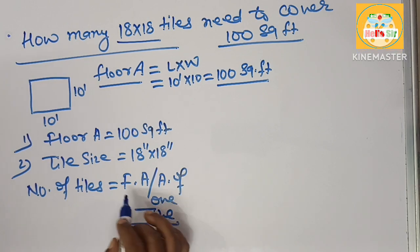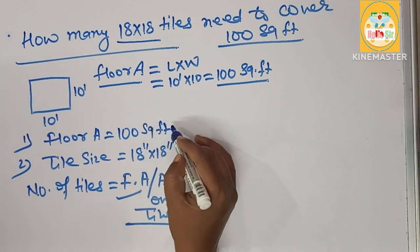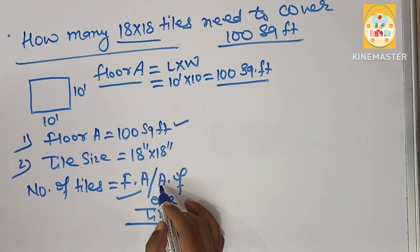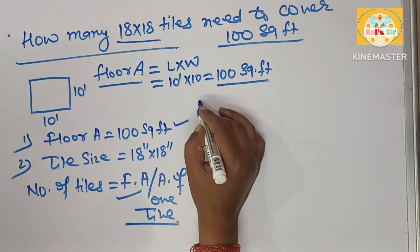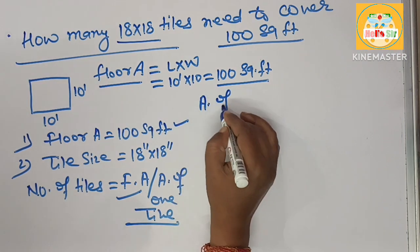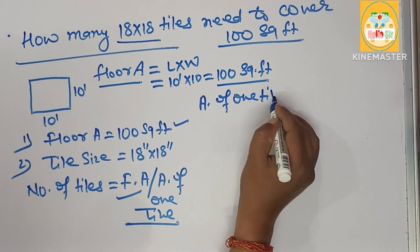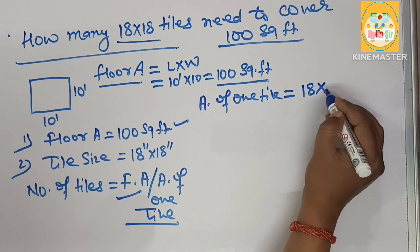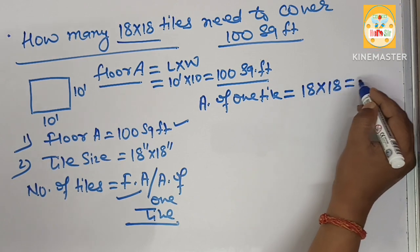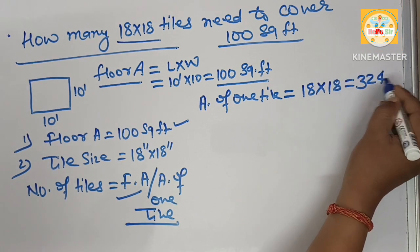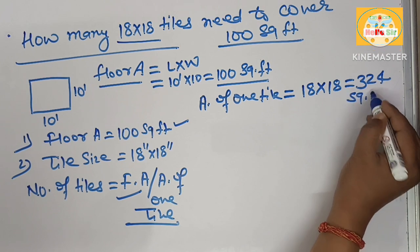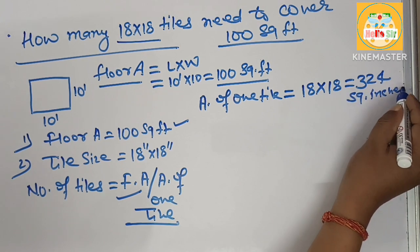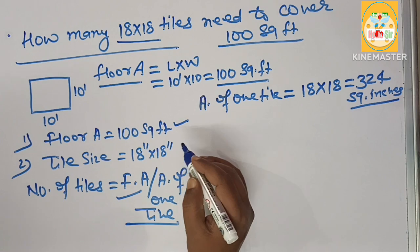You have given here floor area is 100 square foot and you have to find out first area of one tile. Here we calculate area of one tile. First we calculate in square inches. 18 multiply by 18, this will come to 324 square inches.